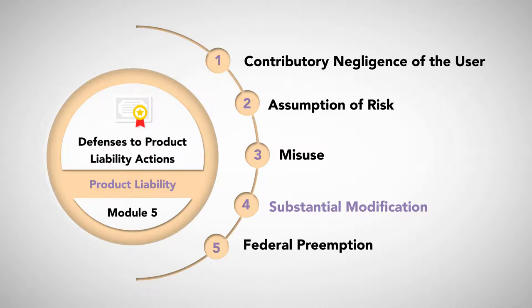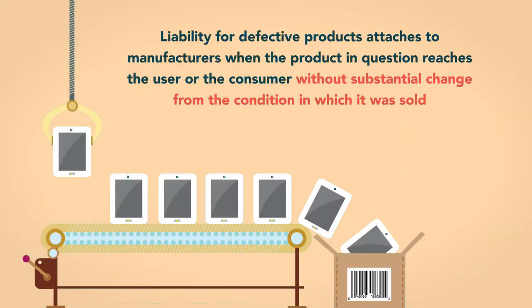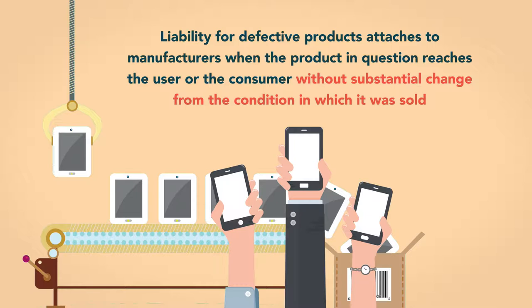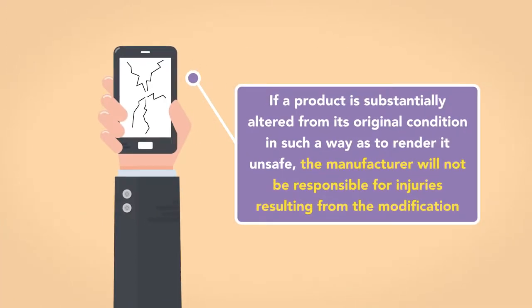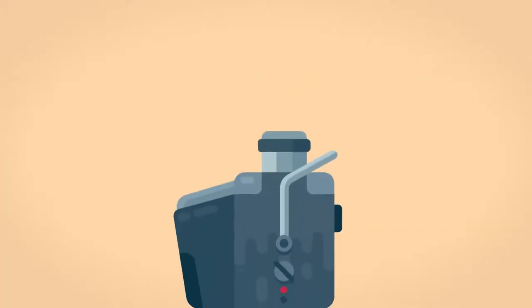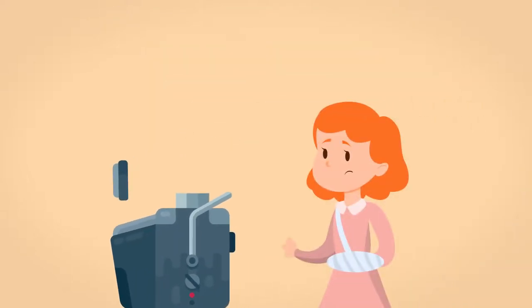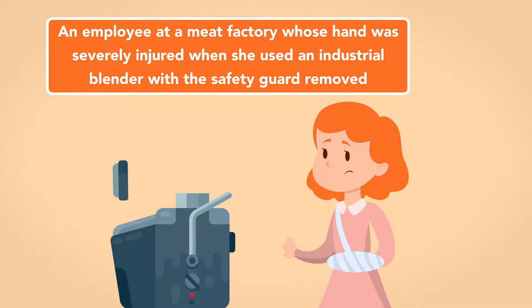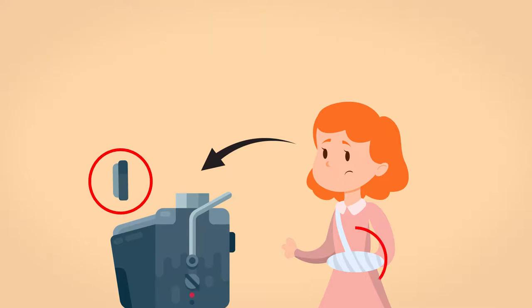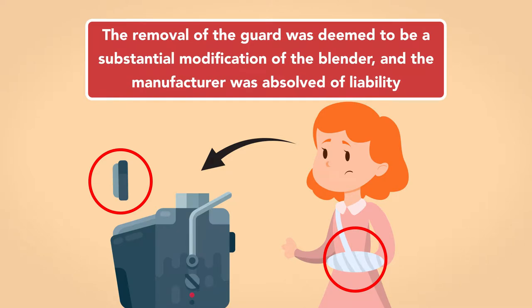Substantial modification: liability for defective products attaches to manufacturers when the product in question reaches the user, or the consumer, without substantial change from the condition in which it was sold. If a product is substantially altered from its original condition in such a way as to render it unsafe, the manufacturer will not be responsible for injuries resulting from the modification. The most common form of modification that absolves the manufacturer of liability is the removal of safety devices designed to make the product safe for use. This was the situation in a case involving an employee at a meat factory whose hand was severely injured when she used an industrial blender with the safety guard removed. Since the purpose of the guard was to prevent the specific kind of injury the employee suffered, the removal of the guard was deemed to be a substantial modification of the blender, and the manufacturer was absolved of liability.